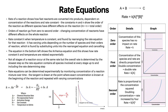Rate constant K is found when temperature is constant by rearranging the rate equation. It has varying units depending on the number of species and their orders of reaction, found by substituting units into the rearranged equation and cancelling. The Arrhenius equation shows how rate constant K and temperature are related exponentially. Not all stages of a reaction occur at the same rate, but the overall rate is determined by the slowest step. The rate equation contains all species involved in every stage up to and including the rate-determining step. Rate equations can be determined experimentally by monitoring concentration of a reaction mixture over time, drawing the tangent at the point where exact concentration is known at the beginning of the reaction and repeating with varying concentrations.